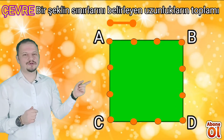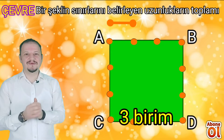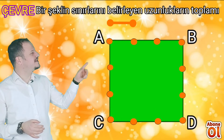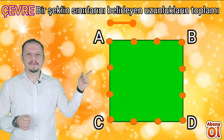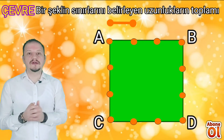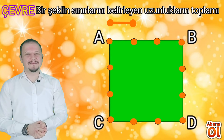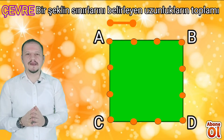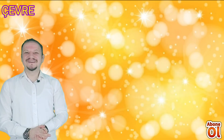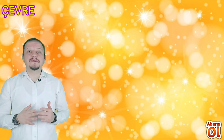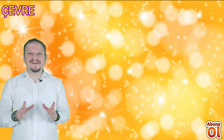Alttaki kenara geçiyoruz: bir birim, iki birim, üç birim — o da aynı uzunlukta çıktı. Ve son kenara geçiyoruz: bir birim, iki birim, üç birim. Bakın bütün kenarların uzunlukları da üç birim olarak çıkmış oldu. Yani karenin bütün kenarlarının uzunlukları birbirine eşittir çocuklar.